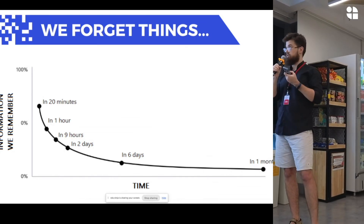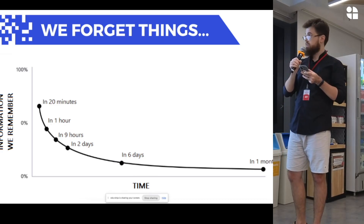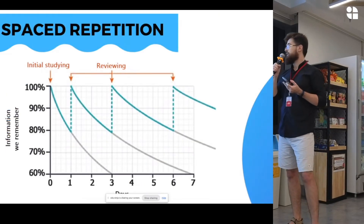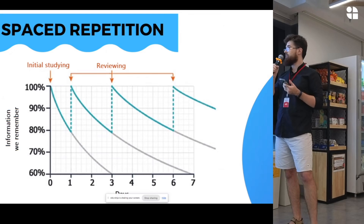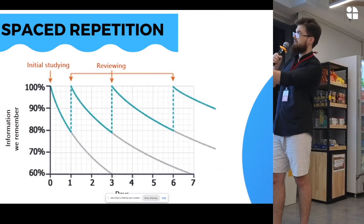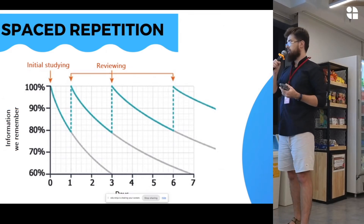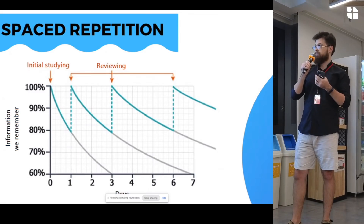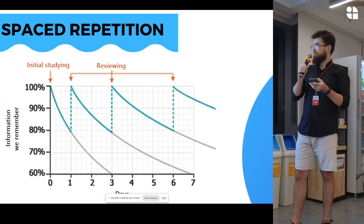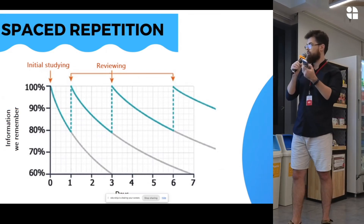To achieve that, you need to repeat the information. And you don't have to repeat it every day — instead, you can use the spaced repetition approach. For example, you can repeat information on the first day, then on the third day, then on the sixth day, then on the twenty-fifth, and so on. The idea is that you don't need to spend a lot of time repeating information — you can spend less time but still effectively memorize everything.